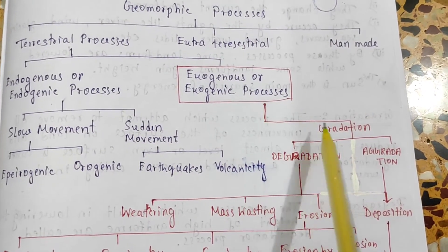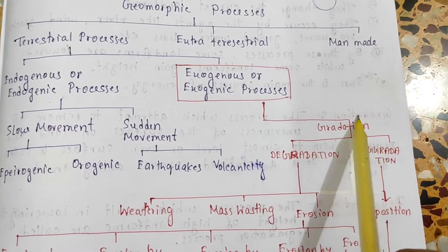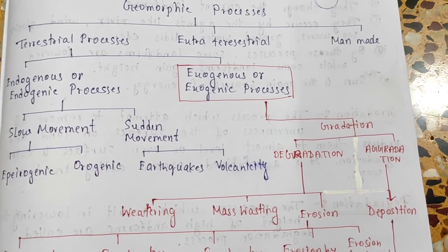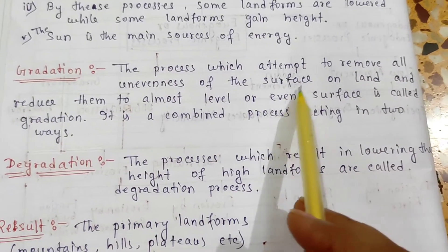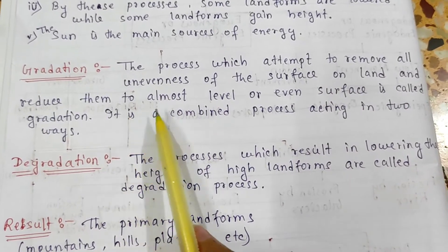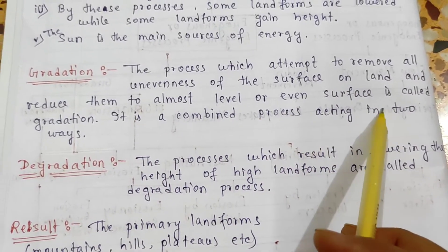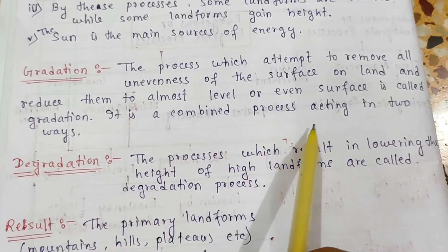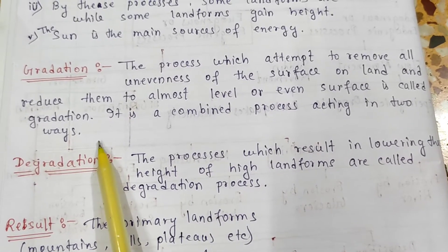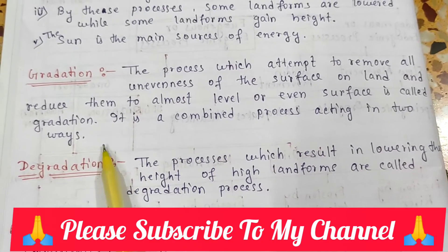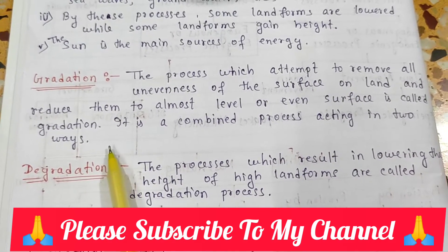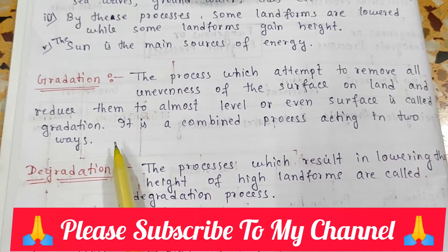Exogenetic processes come under gradation. Gradation can be divided into two parts: degradation and aggradation. The process which attempts to remove all unevenness of the surface on land and reduce them to an almost level or even surface is called gradation. It is a combined process acting in two ways — gradation is a process by which the uneven and rough surface of the earth is gradually smoothened by erosion or deposition in order to attain a plain and polished landform.